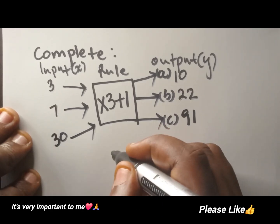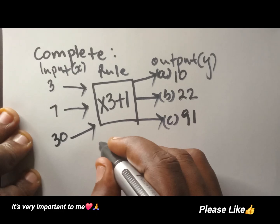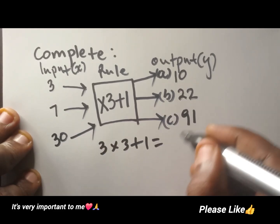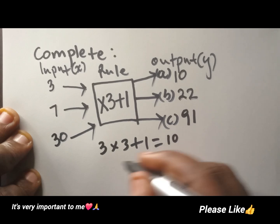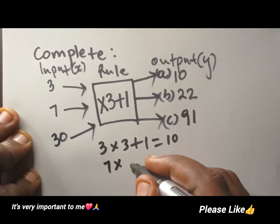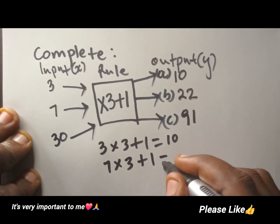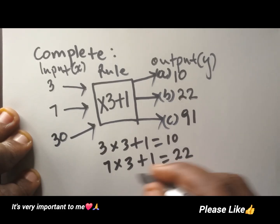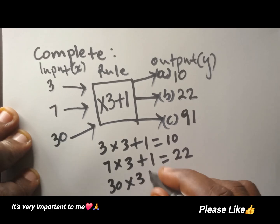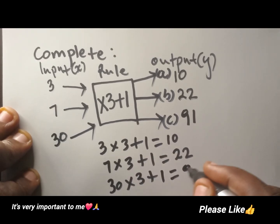Sometimes they want you to show all the work. So it's more like: 3 times 3 plus 1, then you get the answer which is 10. Now 7 times 3 plus 1 is equal to 22. And then you say 30 times 3 plus 1, which is going to be 91.